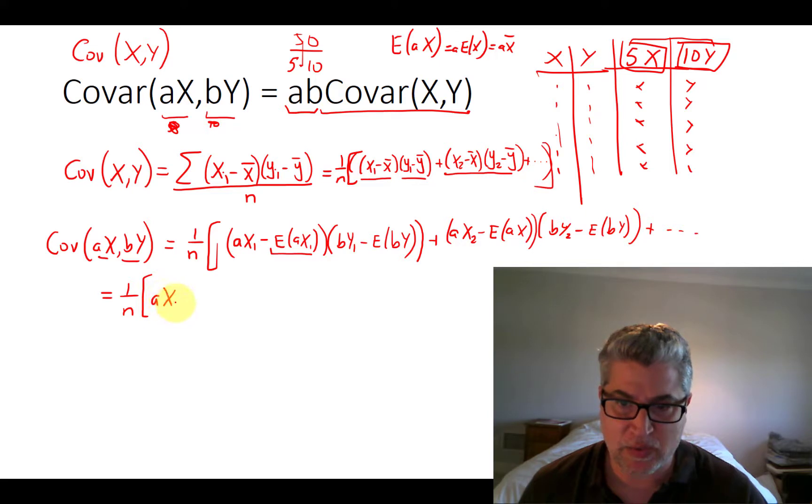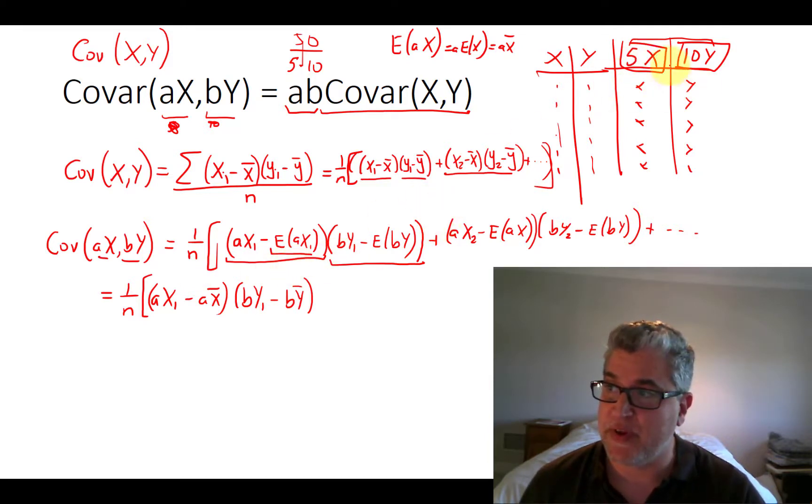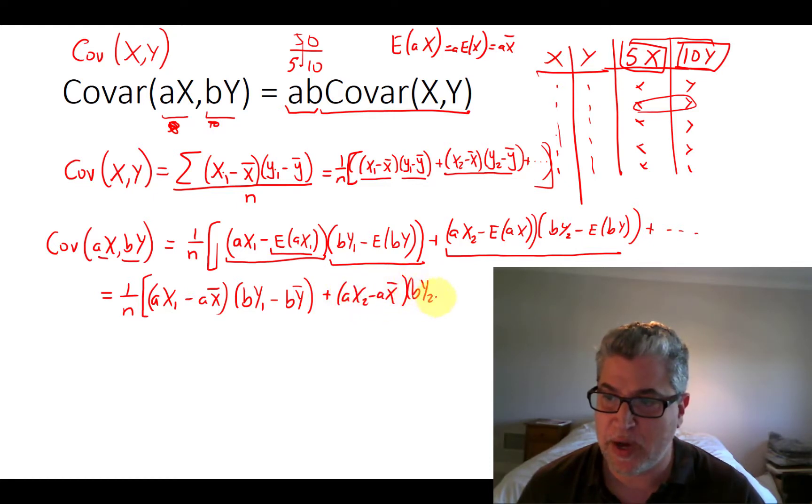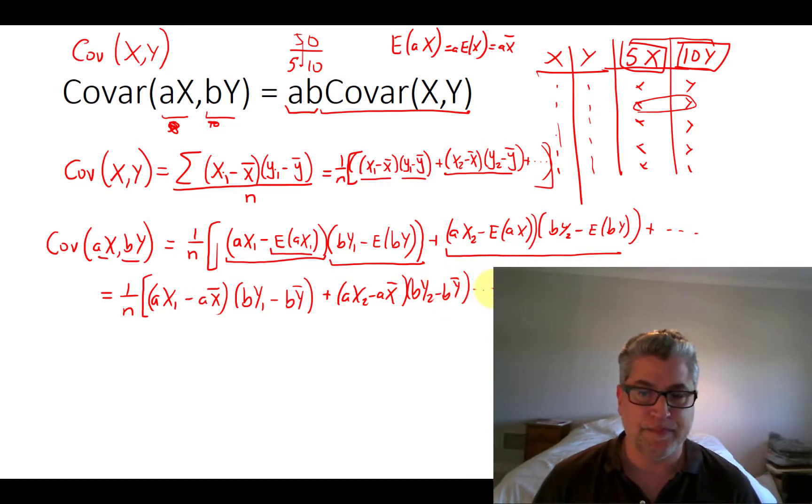So we have AX1 minus AX bar. All right, so that's this guy here. And now let's do this. We have BY1 minus BY bar. Okay, that's so much for our first pair of observations. What about our second pair of observations? We need to do that here, too. So we have AX2 minus AX bar. BY2 minus BY bar. And so on.